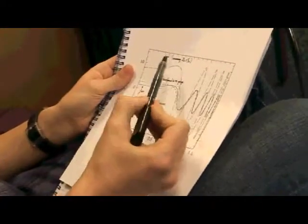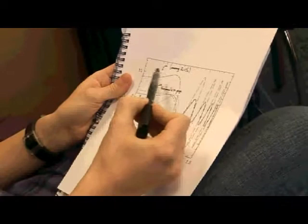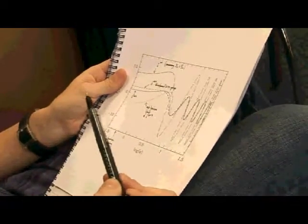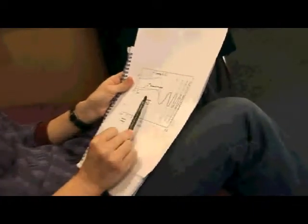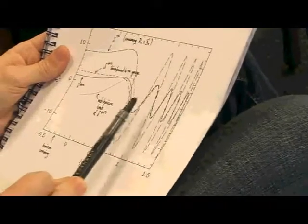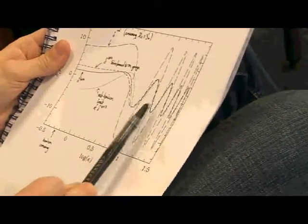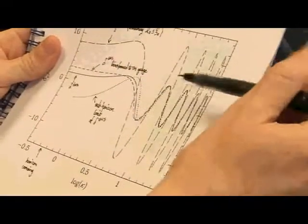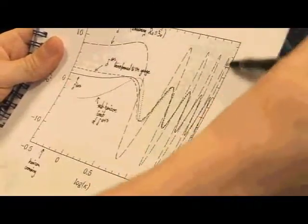Basically what should be going on here is that these different curves are different ways of doing the calculation. Over here, at least, they should all match up. And as you can see, three of them sort of do, but the other one definitely doesn't. So I'm trying to get to the bottom of why these things aren't matching up.